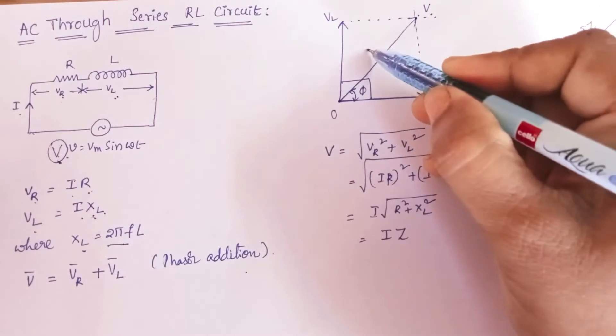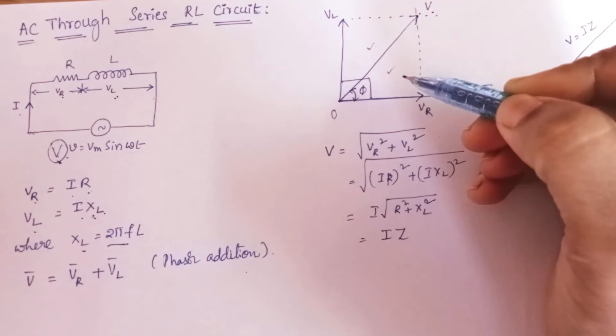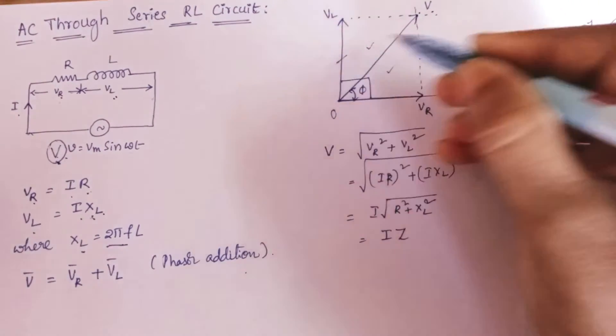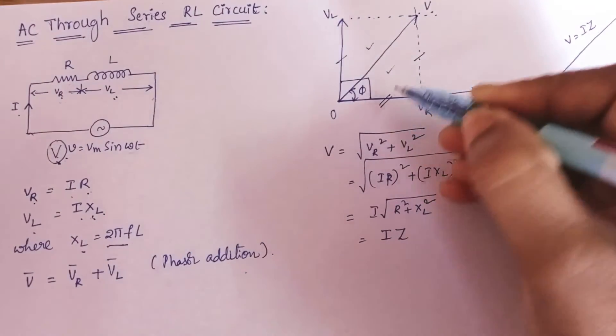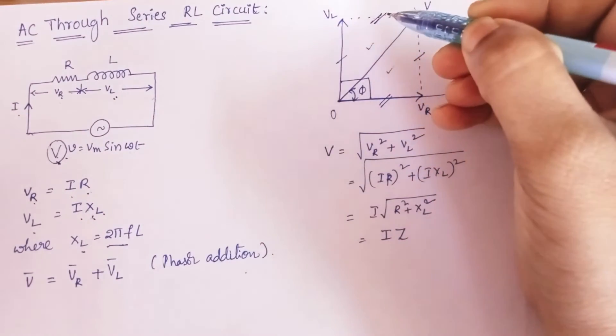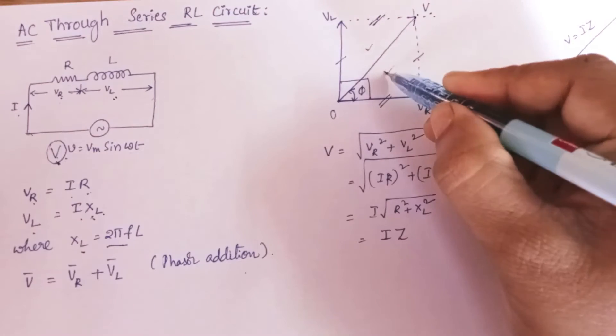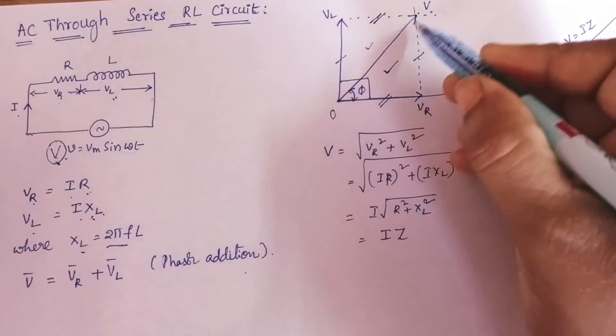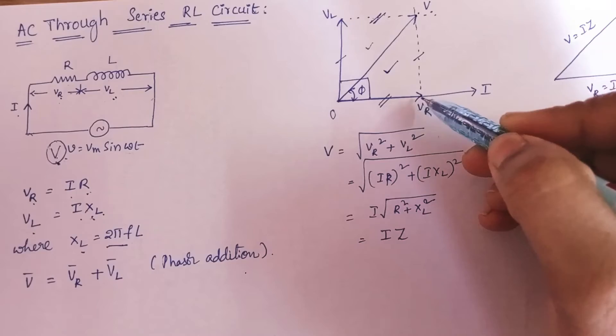So as you can see, these two triangles are similar triangles. So these two sides are equal and these two sides are equal. So I am picking up this triangle. This triangle will be called as voltage triangle.